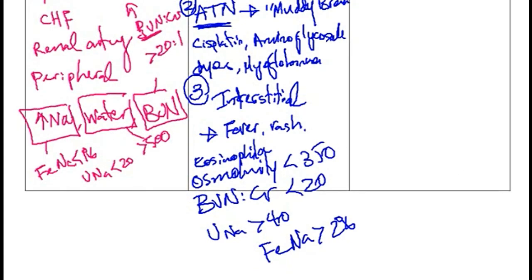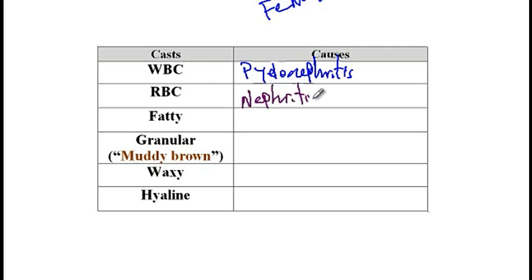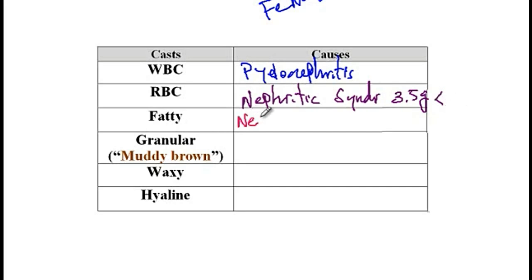Since intrinsic renal failure is associated with formation of different casts, let's review them. White blood cell casts are seen with pyelonephritis — infection of the kidneys — while bladder infections or cystitis do not present with WBC casts, making them specific to pyelonephritis. Red blood cell casts are seen in nephritic syndrome, where patients secrete less than 3.5 grams of protein per day.